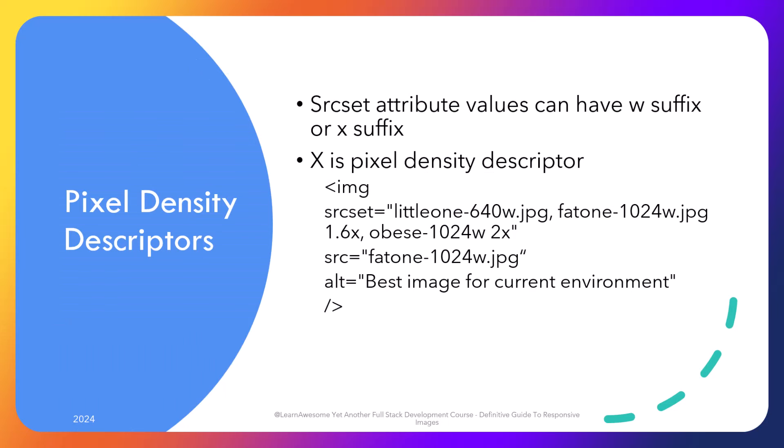I mentioned that source set attribute values can either have a 'w' or 'x' suffix. Time to introduce the x suffix — or more technically the x descriptor, or pixel density descriptor. It is a way of specifying image variants to use for devices with different device pixel ratios. Is it any different from the w descriptor? Well, somewhat similar since higher pixel density implies high resolution, but with a key difference: we do not use the sizes attribute with x descriptors, so media conditions are not involved. The browser chooses the right image variant from source set based on its knowledge of screen pixel density.